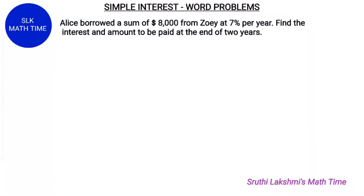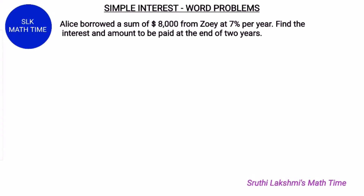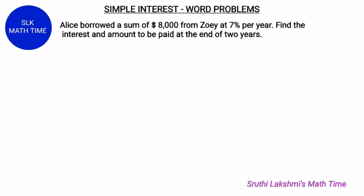Hi, welcome to Shruti Lakshmi's virtual class. Today we're going to see some word problems on simple interest. Alice borrowed $8000 from Zoe at 7% per year. We have to find the interest and the amount to be paid at the end of two years.